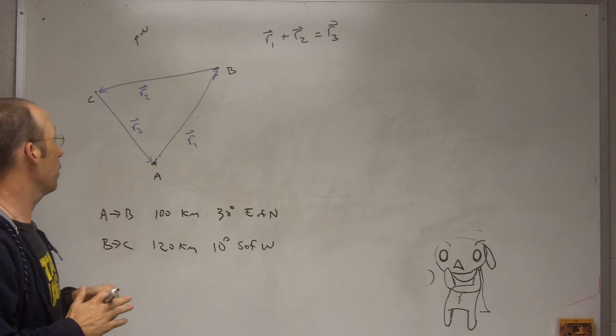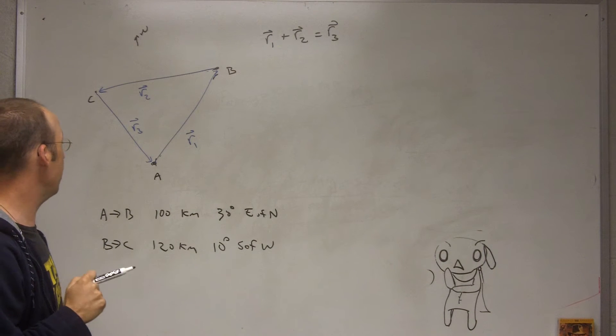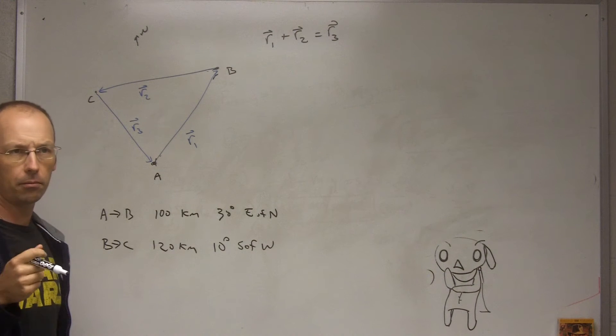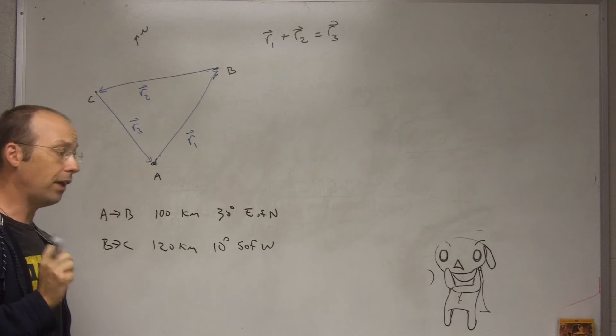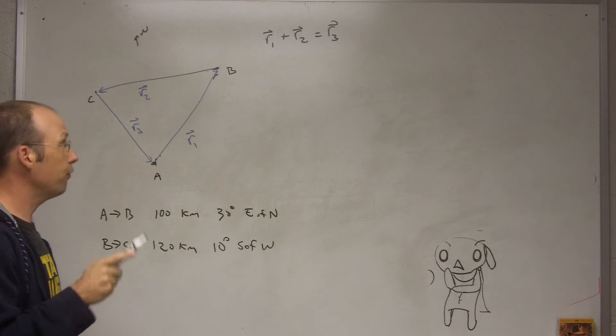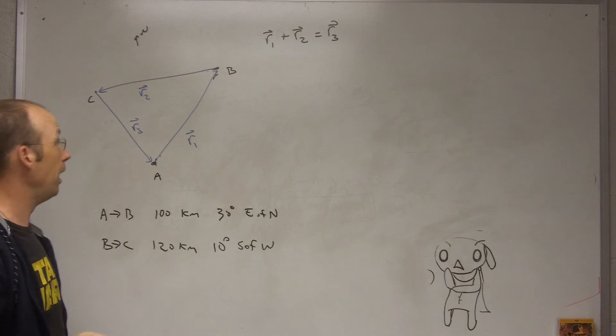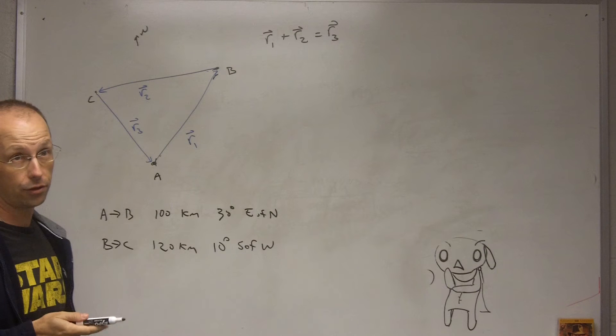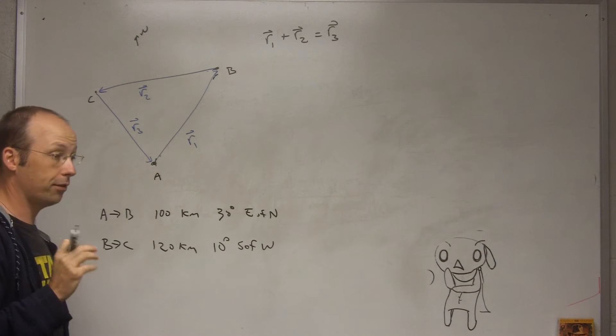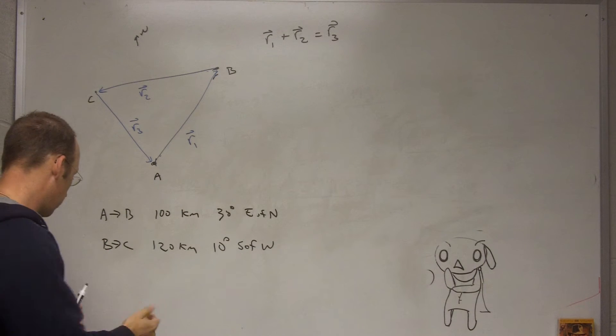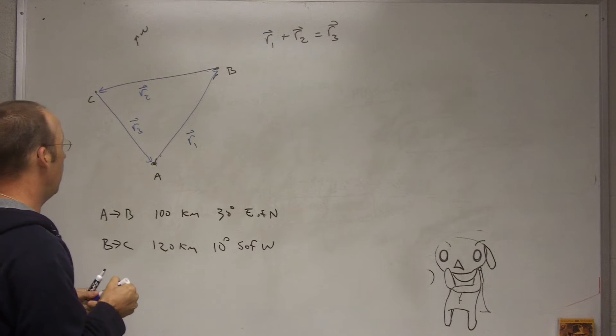And now we want to find vector r3. So we just have to, if we can somehow represent vector r1 and r2, then do a vector addition problem, we could find that. Now I find a lot of people will try to take this problem and just use the law of sines and cosines or something like that, and that's valid, but if you do this a different way it's going to save you some time and frustration, especially if you have three or four vectors that you're adding.